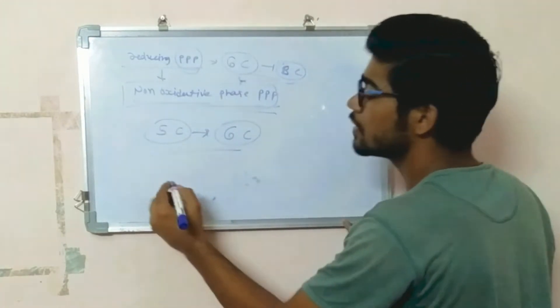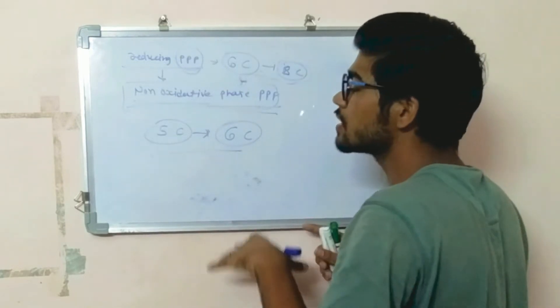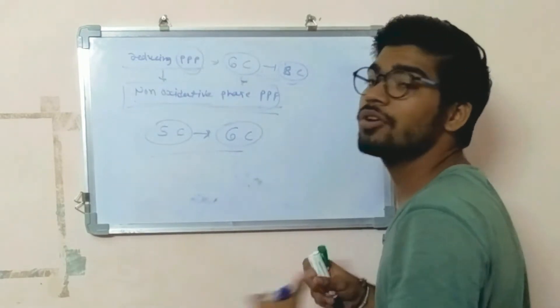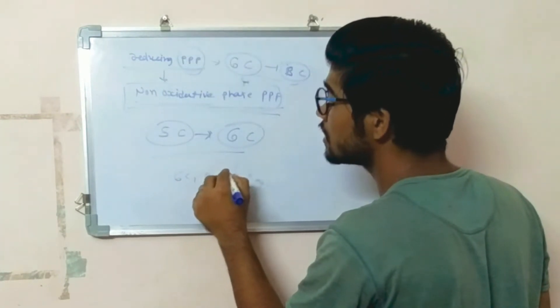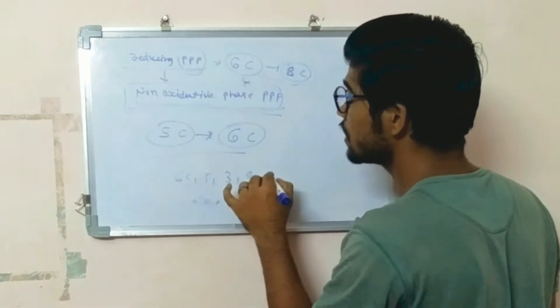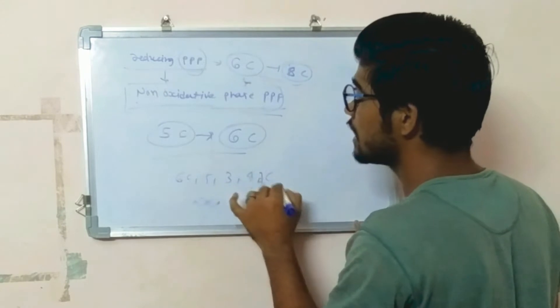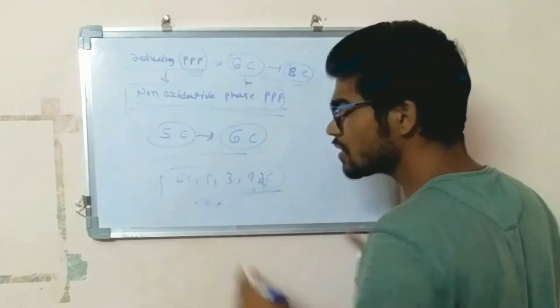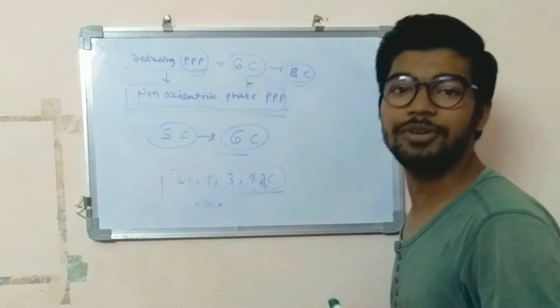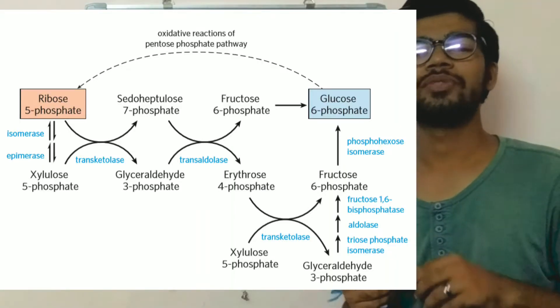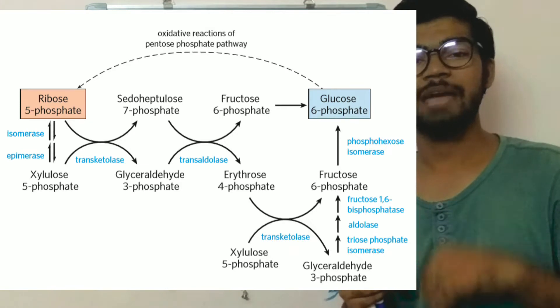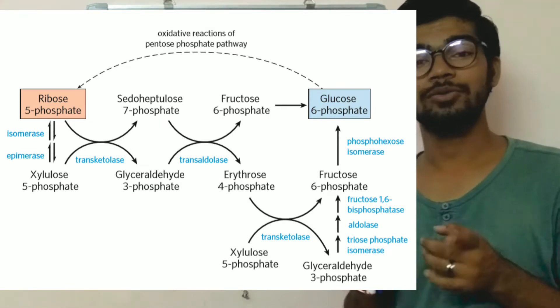In this reaction, mostly the rearrangement of carbons into six-carbon sugar, five-carbon sugar, three-carbon sugar, four-carbon sugar, and seven-carbon sugar occurs by using various enzymes present in the cytosol. As shown in the figure, the five-carbon sugar ribose-5-phosphate is first epimerized and isomerized into xylulose-5-phosphate.